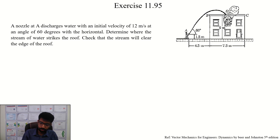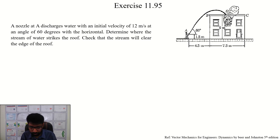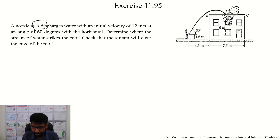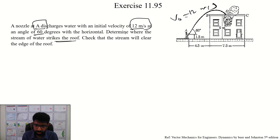In this case, if you look at the theory in the project, you can solve some mathematical problems. Here is a simple problem. At point A, this charges water with an initial velocity of 12 meters per second. The initial velocity is 12 meters per second, and the angle is 60 degrees. Determine whether the stream of water strikes the roof.